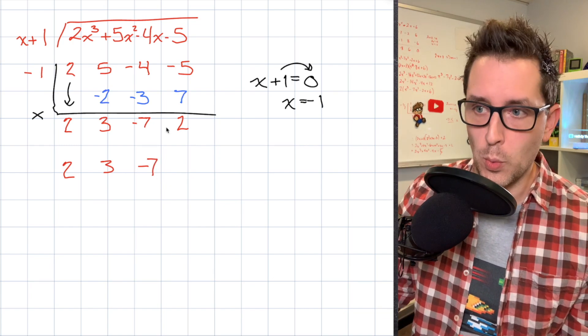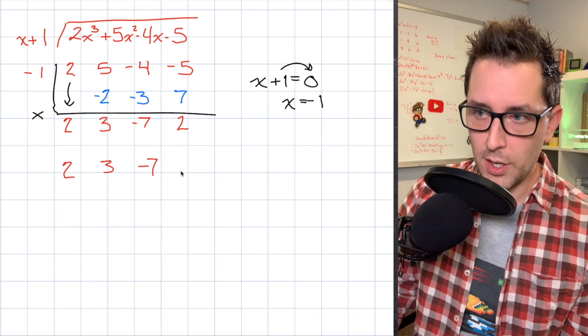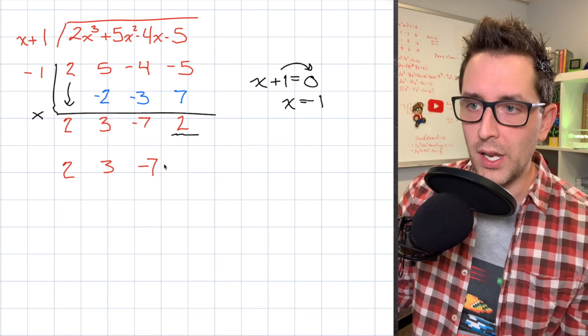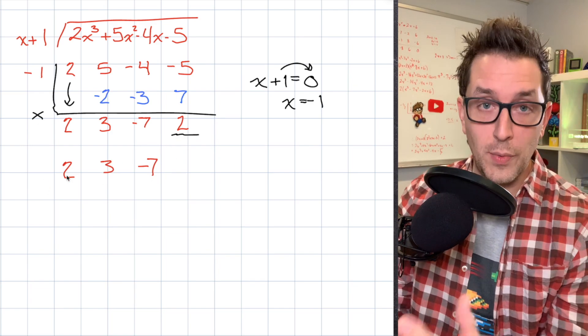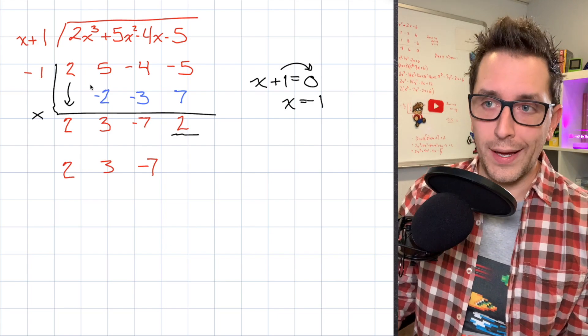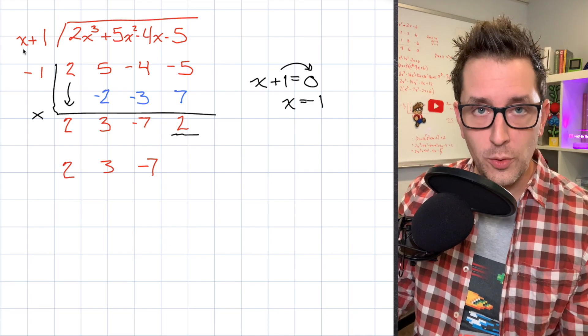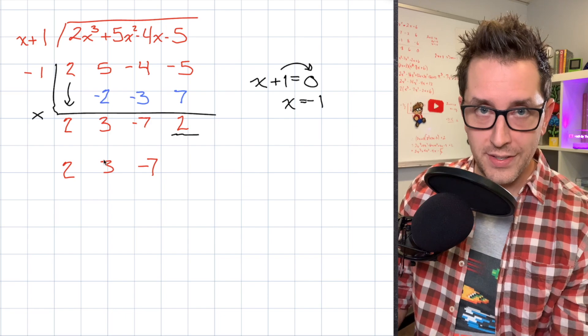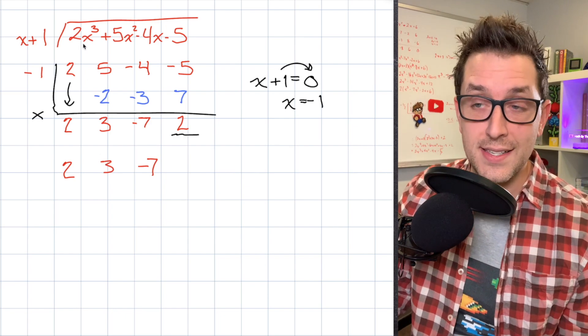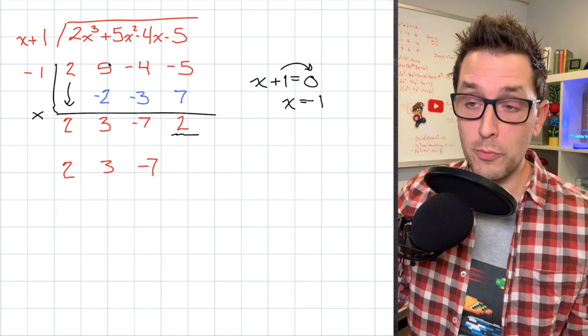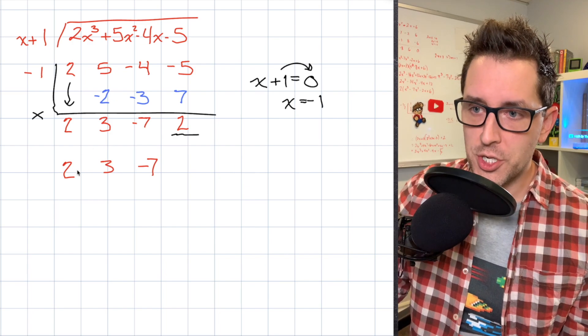So I'm just going to write these first three numbers here. And we'll get to this little 2 here in just a moment. The first three numbers I'm going to use as my coefficients of my quotient. So since I took a cubic and I divided it by a binomial with degree 1, I know that my quotient is going to have a power that is 1 less than my dividend, which was a cubic. So my quotient will be an expression of degree 2. That's 1 degree less than my dividend, which was a cubic.